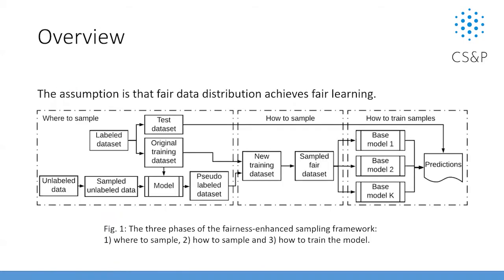Here is the overview of our method. We divided it into three pieces. The first is where to sample — we take unlabeled data, use sampled unlabeled data to train a model, get pseudo-labeled datasets, and move to the next piece: how to sample. We combine pseudo-labeled and labeled data into new training datasets and use a fair sampling method to sample from this new training data. Based on that, we train k models and use ensemble learning to make the final decision.